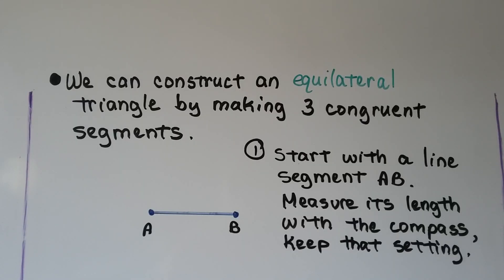So now that we remember how to make a congruent segment, we can construct an equilateral triangle by making three congruent segments. We start with a line segment, like AB, and we measure its length with the compass and we keep that setting. So we're going to keep this setting of our compass.